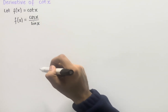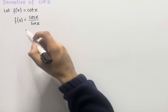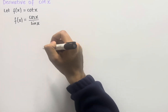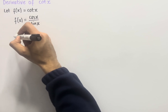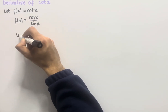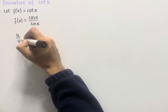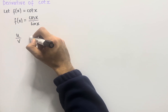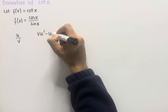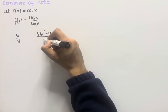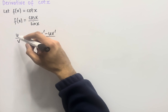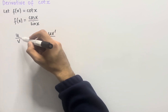Now since we have a fraction here, if we want to differentiate this to work out the derivative, we can use the quotient rule. The quotient rule tells us that if we have something of the form u over v, then the derivative is equal to v u dash minus u v dash, all over v squared, where u dash is the derivative of u and v dash is the derivative of v.